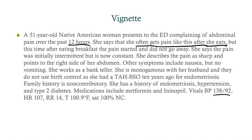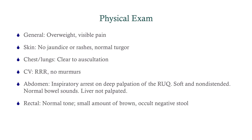Vitals show an elevated blood pressure, elevated heart rate, a temperature, and she's sitting at 100% on nasal cannula. On physical exam, she's overweight and in visible pain. Skin shows no jaundice or rashes, normal turgor. Heart and lungs are normal.